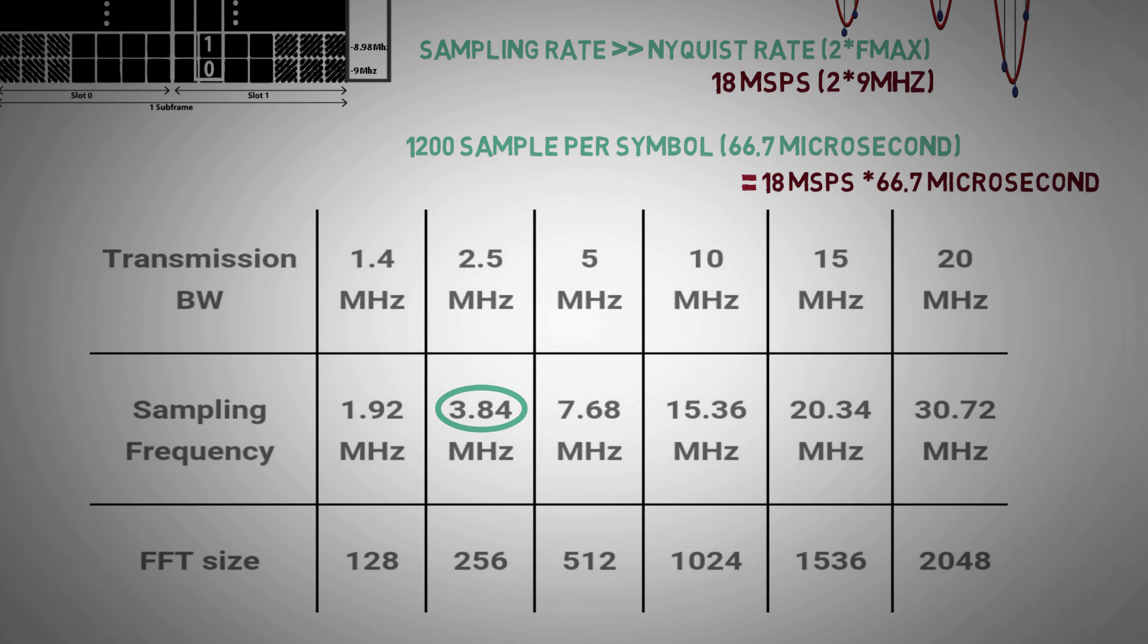Since UMTS had a sampling rate of 3.84 MHz per second, to achieve backwards compatibility, sampling rate in LTE is taken as a multiple of 3.84 MHz per second. Thus for 20 MHz spectrum which has a sampling rate of 30.72 MHz per second, there are 2048 samples per symbol in OFDMA. The FFT size of the IFFT processor thus depends on the LTE bandwidth as shown.